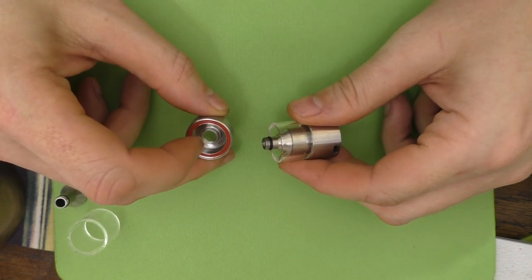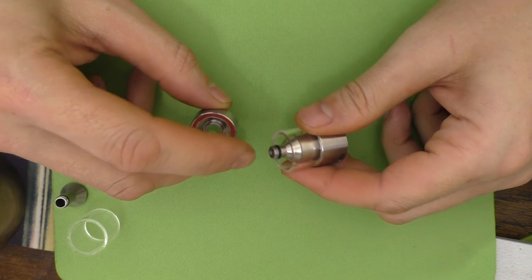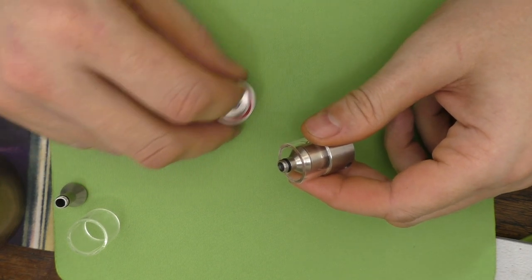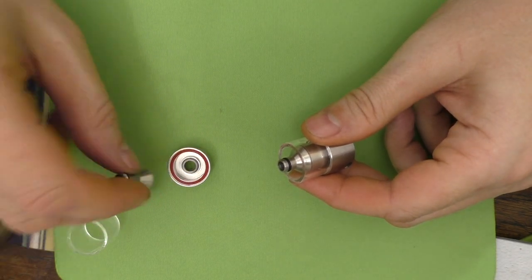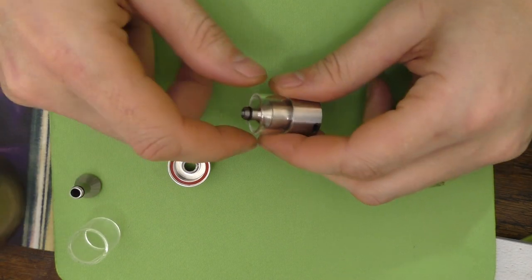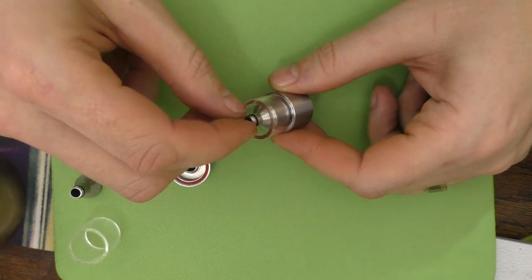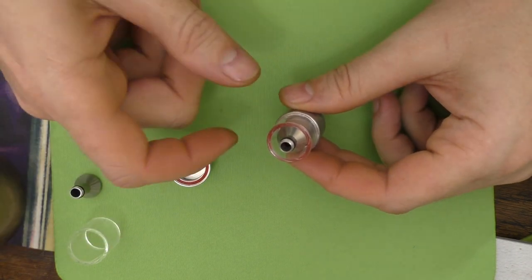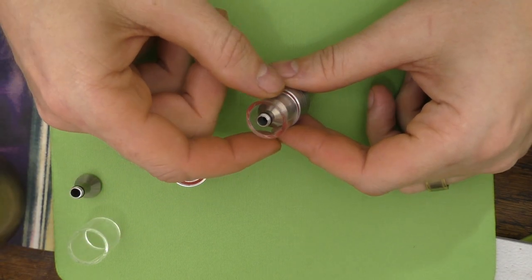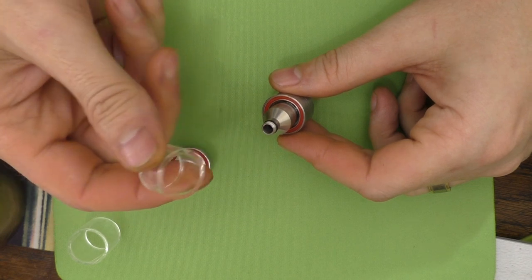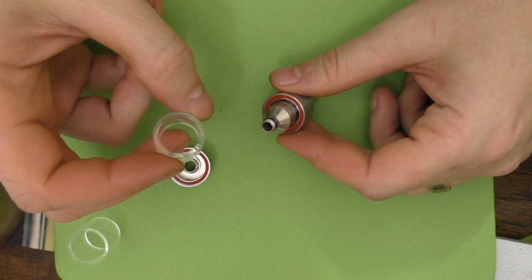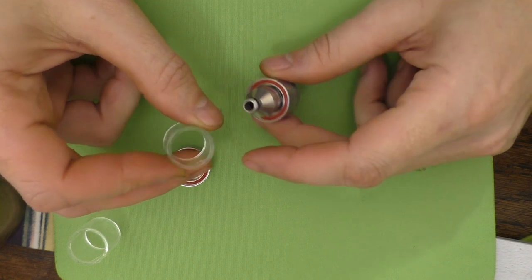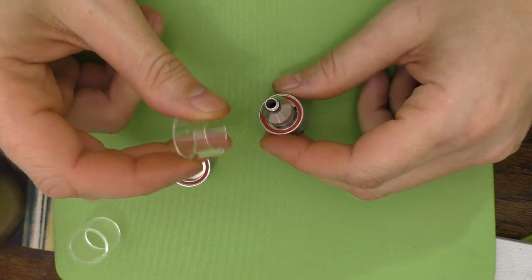So we'll set the larger pieces aside. And we'll take this apart. Basically, you just twist it and the top will come off. And that's threaded in there. It's threaded on the top of the chimney section.